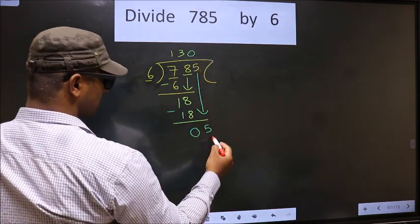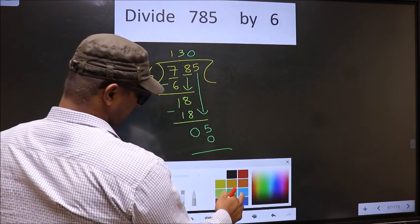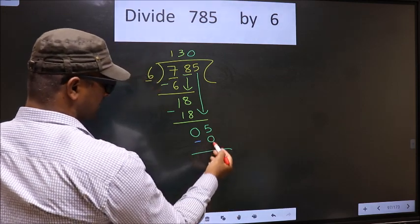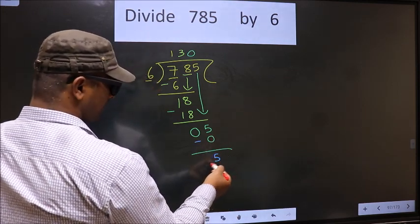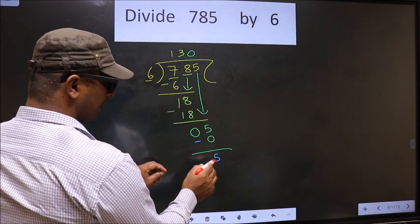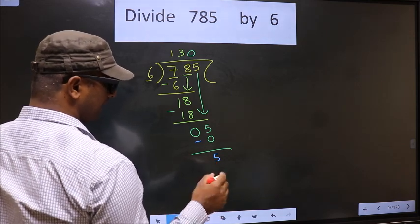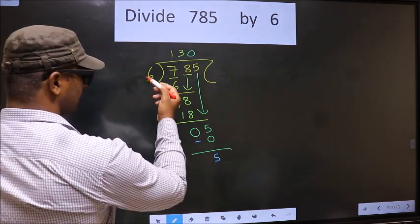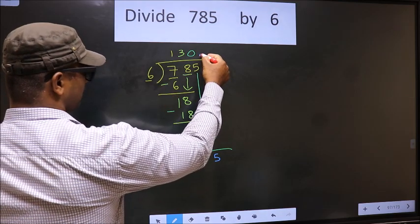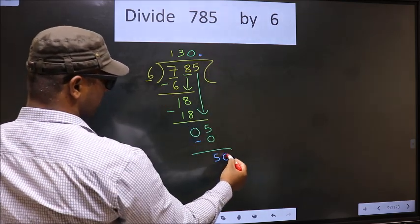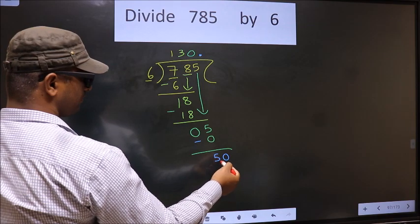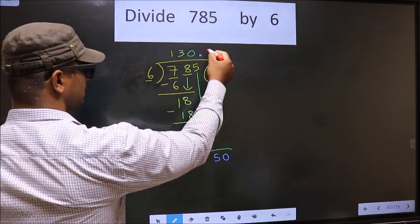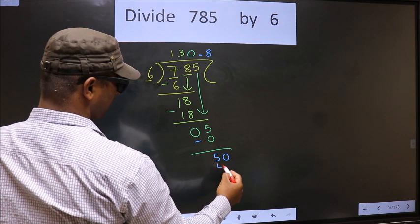So 6 into 0, 0. Now you subtract. 5 minus 0, 5. Over here we did not bring any number down. And 5 is smaller than 6. So now you can put a dot and take 0 here. So 50, a number close to 50 in 6 table is 6, 8, 48.